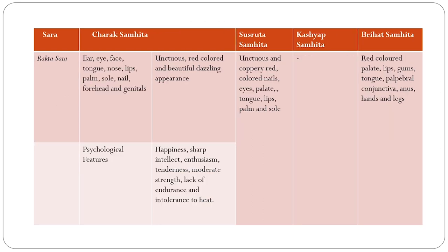The Rakta Sara individual, as per Acharya Charak: Karna, Akshi, Mukha, Jihva, Nasa, Oshtha, Pani, Pada-Tala, Nakha, Lalata, Mehana — all are Snigdha and red-colored. That is, the ear, eye, face, tongue, nose, lips, palm, sole, nail, forehead, and genitals are unctuous, red-colored, beautiful, and of dazzling appearance.